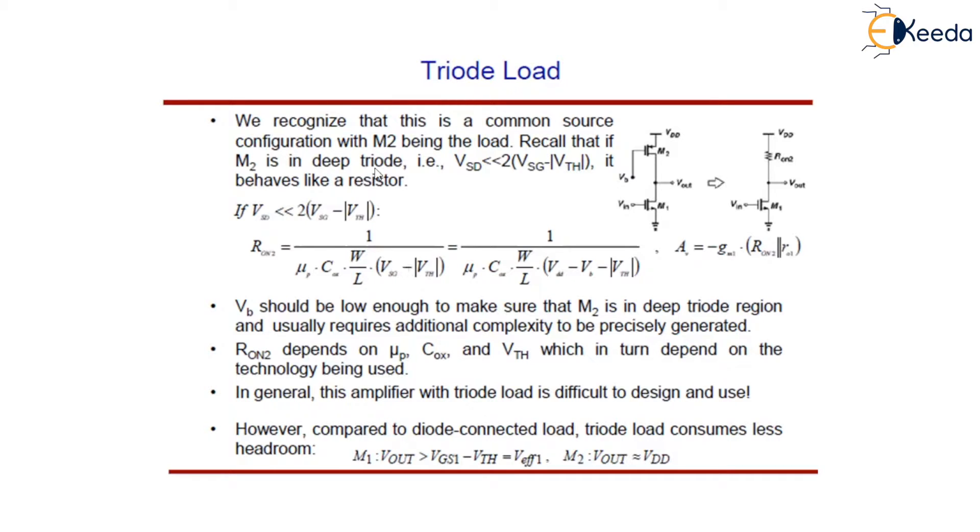For a deep triode region, we have already studied when studying the common source stage with resistor load, that the VSD should be less than 2(VSD - |VTH|).